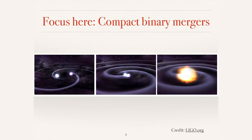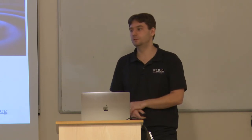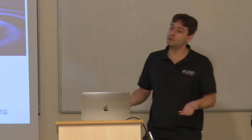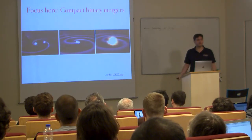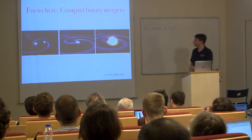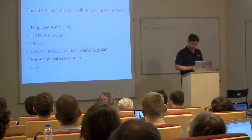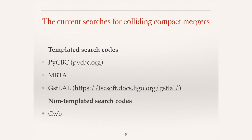The focus here is on compact binary mergers, as it has been throughout the other talks. We'll discuss the methods used to observe these sources, although many of the techniques we cover also apply in other areas — such as observing rotating neutron stars or white dwarf binaries with LISA. There are several different search algorithms currently used, and three of these employ templated searches, relying directly on predicted waveform models.